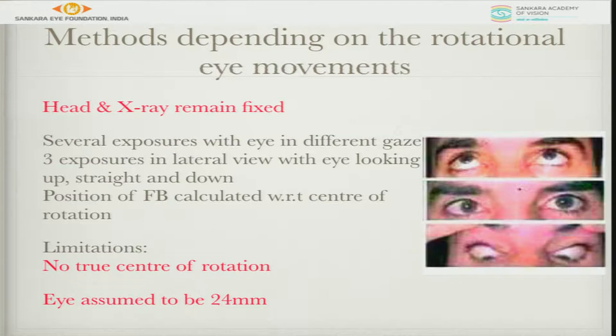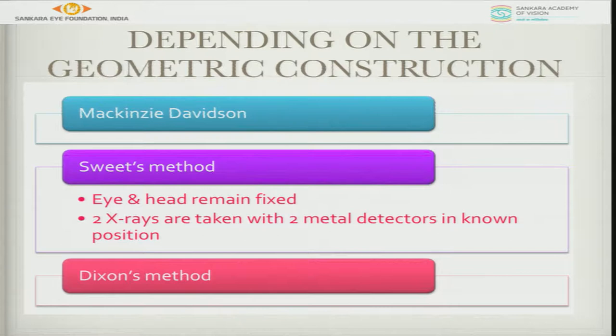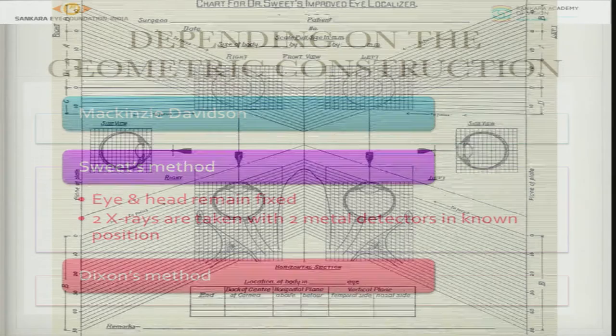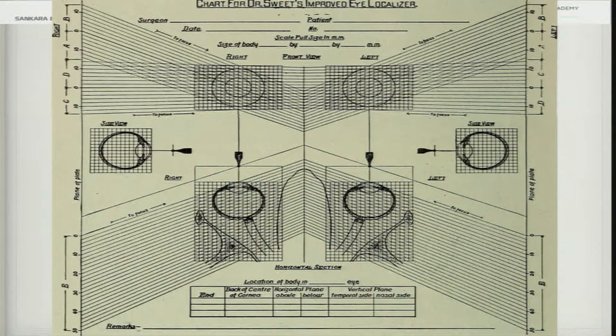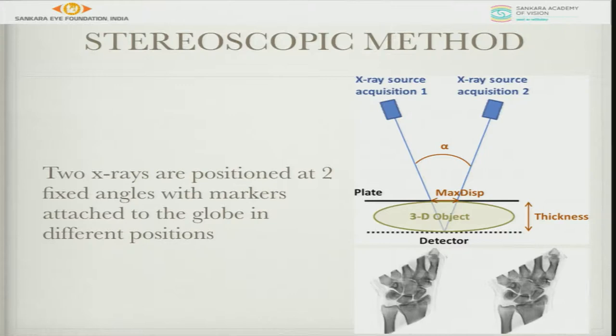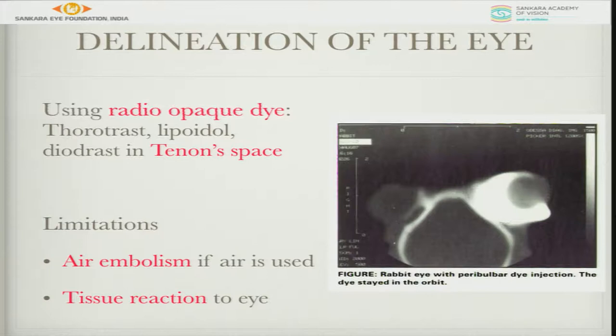Most importantly, the Sweet's method — which postgraduates must understand — uses two metallic identification marks. You take an X-ray and identify whether the foreign body is within the eye or outside. As in this case, the foreign body corresponds to a position outside the eye.